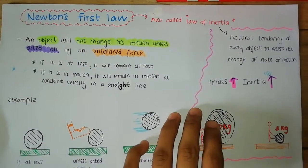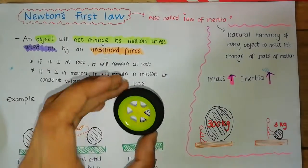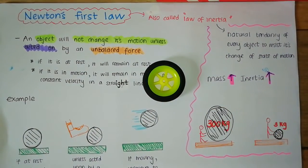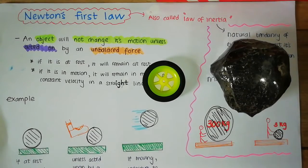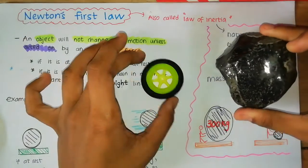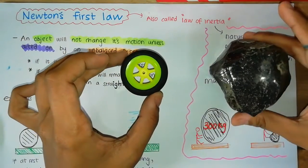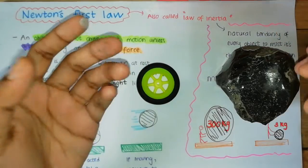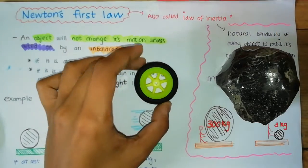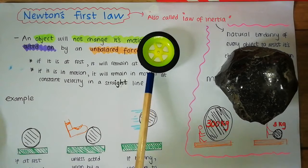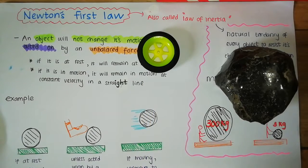So what is inertia? Let's say I have this small wheel and I have this huge rock. This rock could have a mass of around 100 kilograms and this wheel could have a mass of about 5 kilograms. If I want to move the wheel I can simply give it a tiny push and it will move.